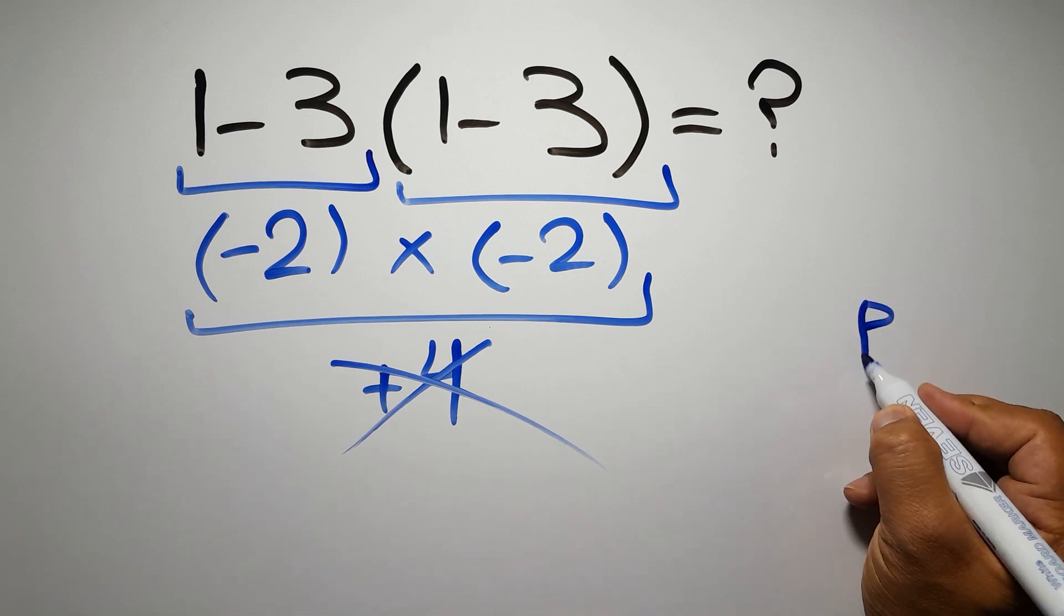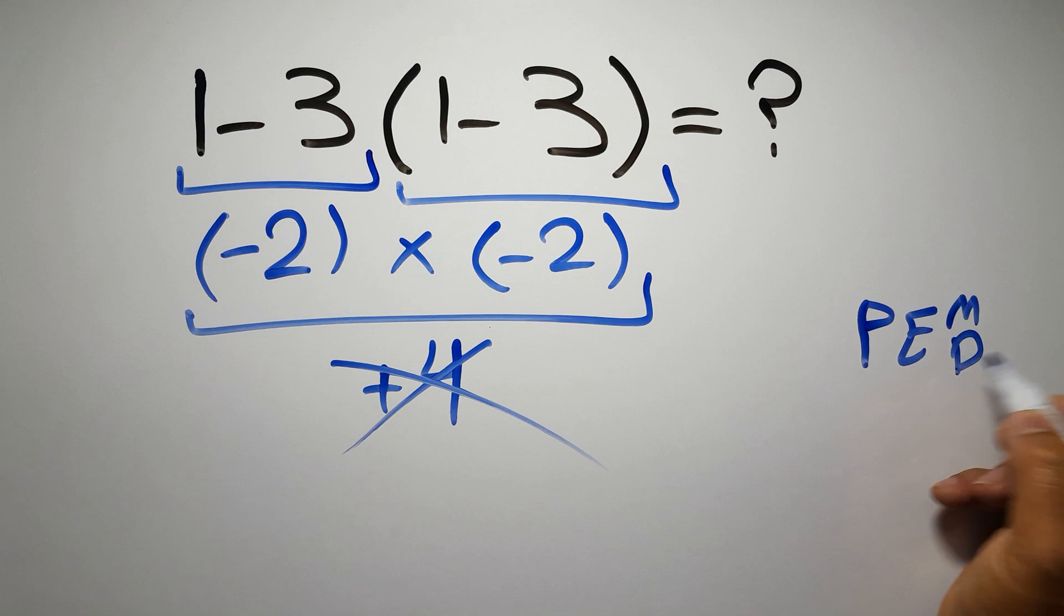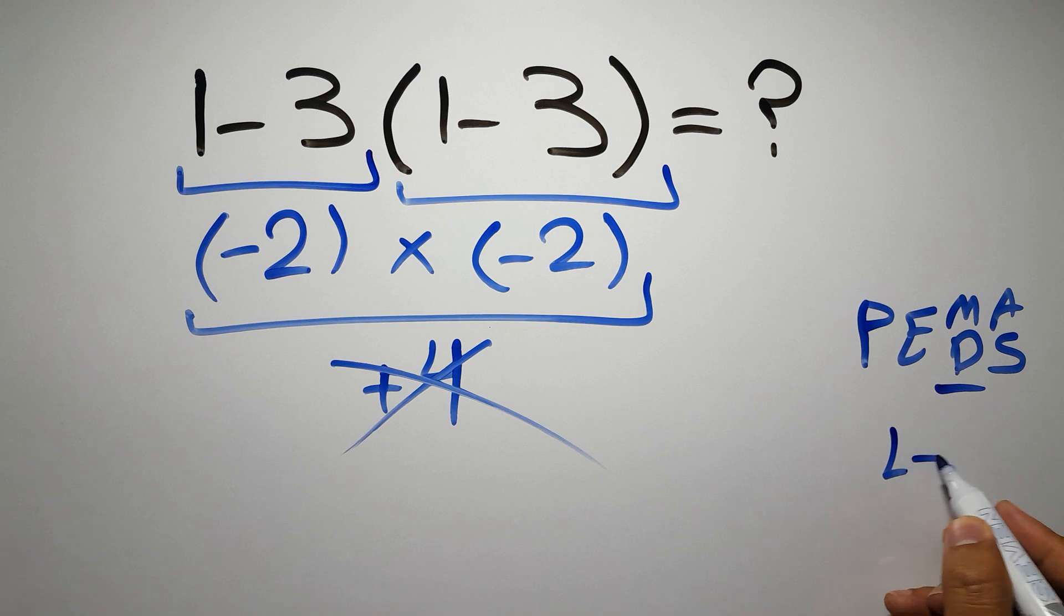First we have to do parentheses, then exponents, then multiplication or division, and finally addition or subtraction. Remember that multiplication and division have equal priority and we have to work from left to right, and the same applies to addition and subtraction.